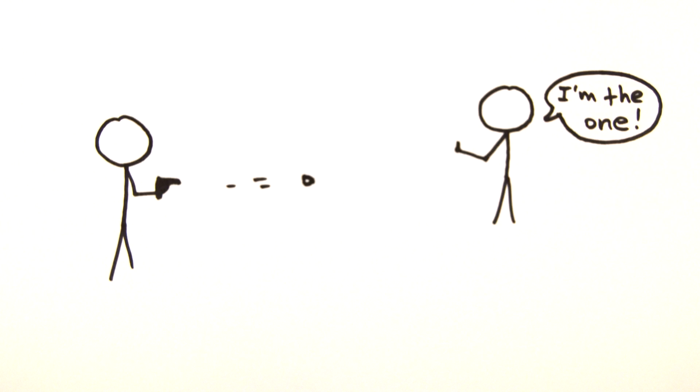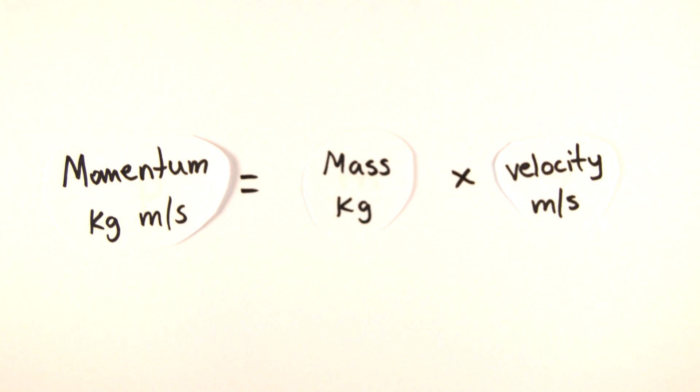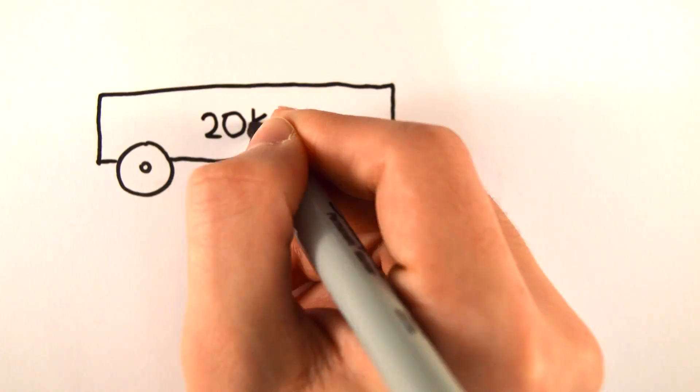It depends on an object's mass and its velocity, so the equation for calculating it is p equals mv, where p is the momentum in kilogram meters per second, m is the mass in kilograms, and v is the velocity in meters per second.